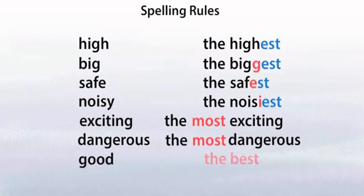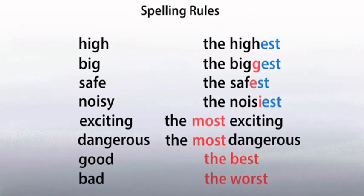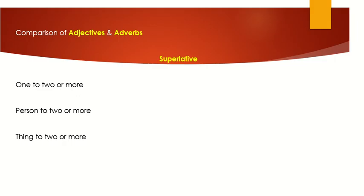'Good' is irregular — we have to say 'the best.' And 'bad' is also irregular — we have to say 'the worst.' Now, we use the superlative form to compare one thing to two or more things, or one person to two or more persons.